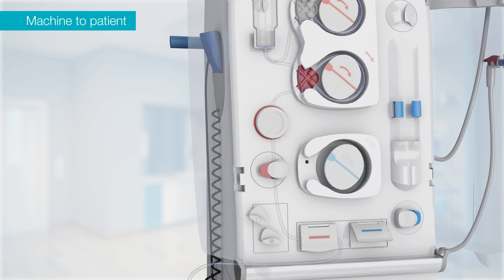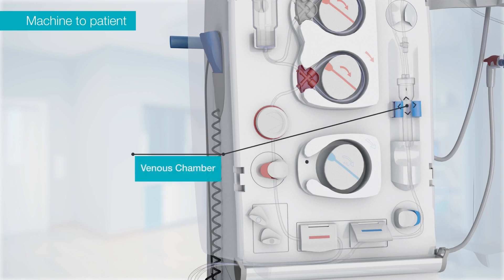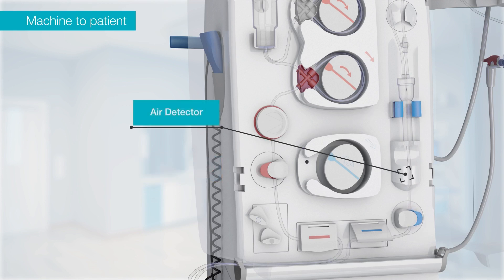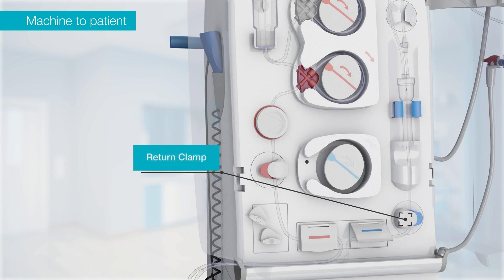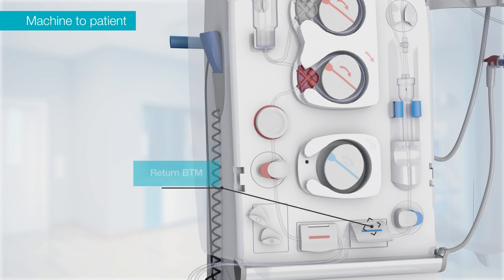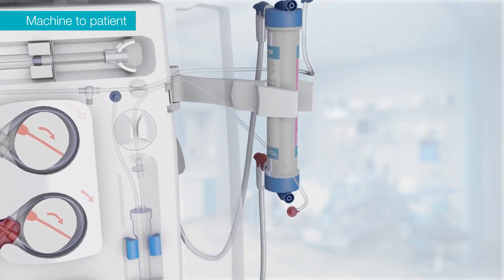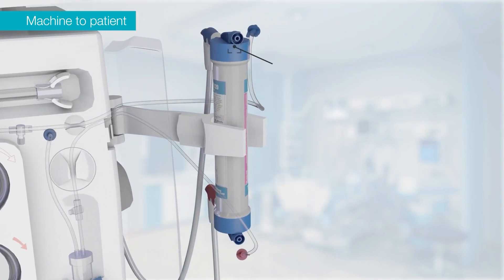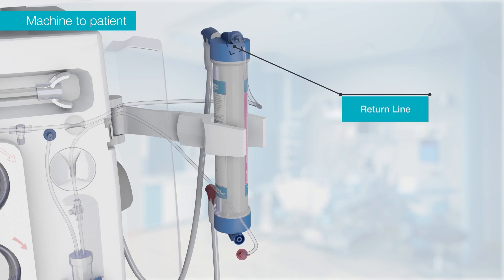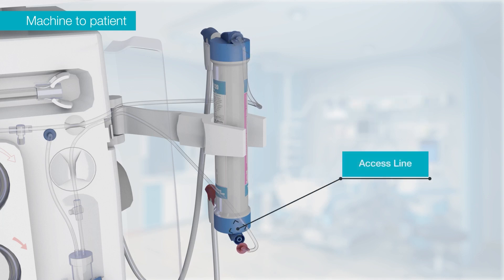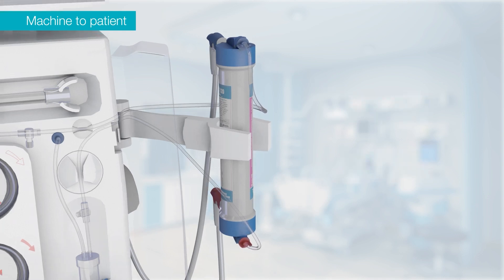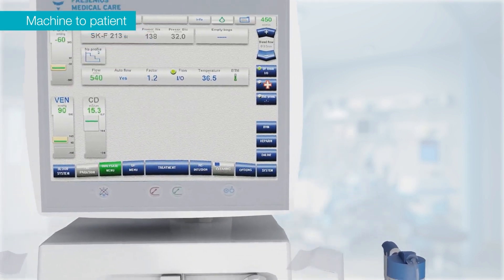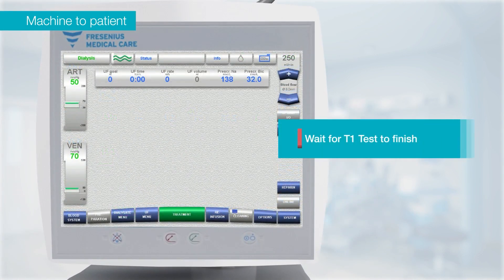For the connections from the machine to the patient, place the venous chamber on the right-hand side of the machine. Feed the line into the air detector, then into the return clamp, followed by the venous blood temperature monitor. Connect the venous pressure port and fix the filter. The return line is then fitted to the top of the filter, and the access line fitted to the bottom. Wait for the T1 test to finish.